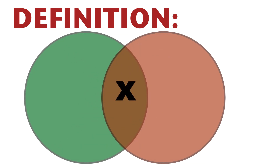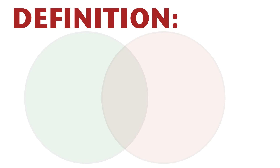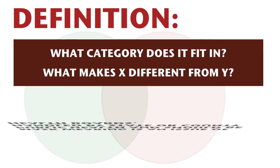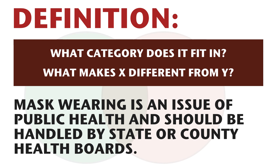Next up, let's talk about definition. Definition claims are concerned with similarities and differences. These claims focus on explaining the nature of a thing and where it does or doesn't fit. With our topic here, perhaps you want to argue which domain of public policy mask wearing fits into. So you argue that mask wearing is a public health issue, which means that regulations should be handled by health boards rather than legislatures.